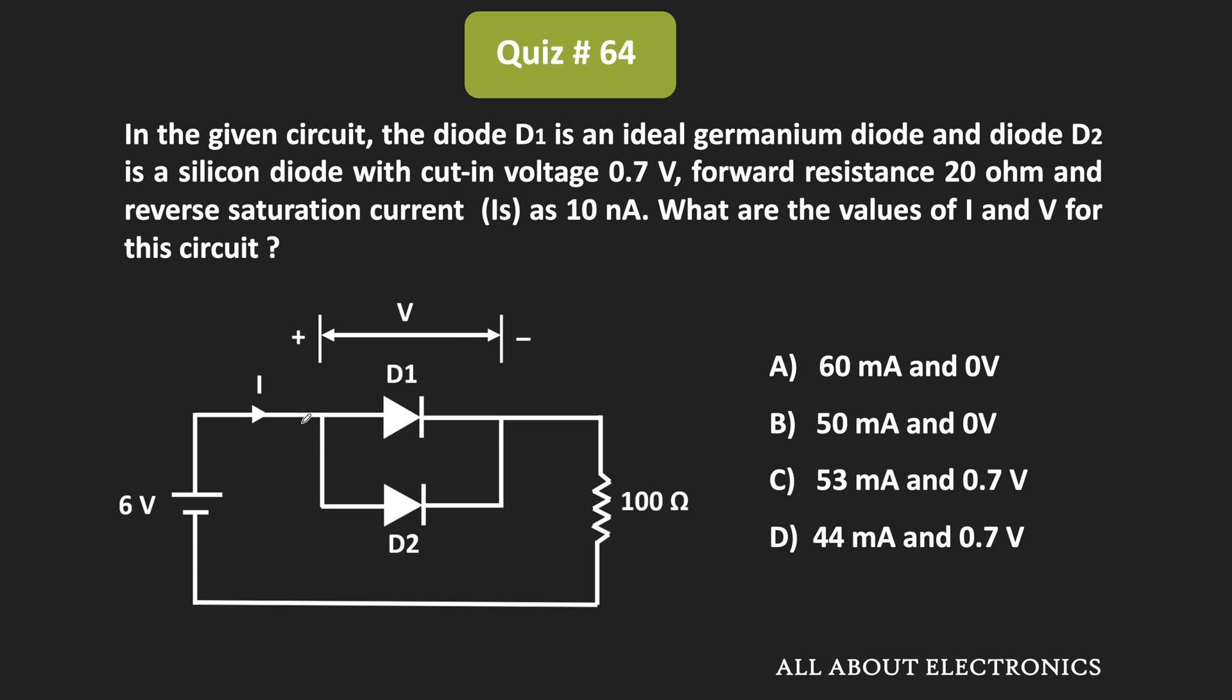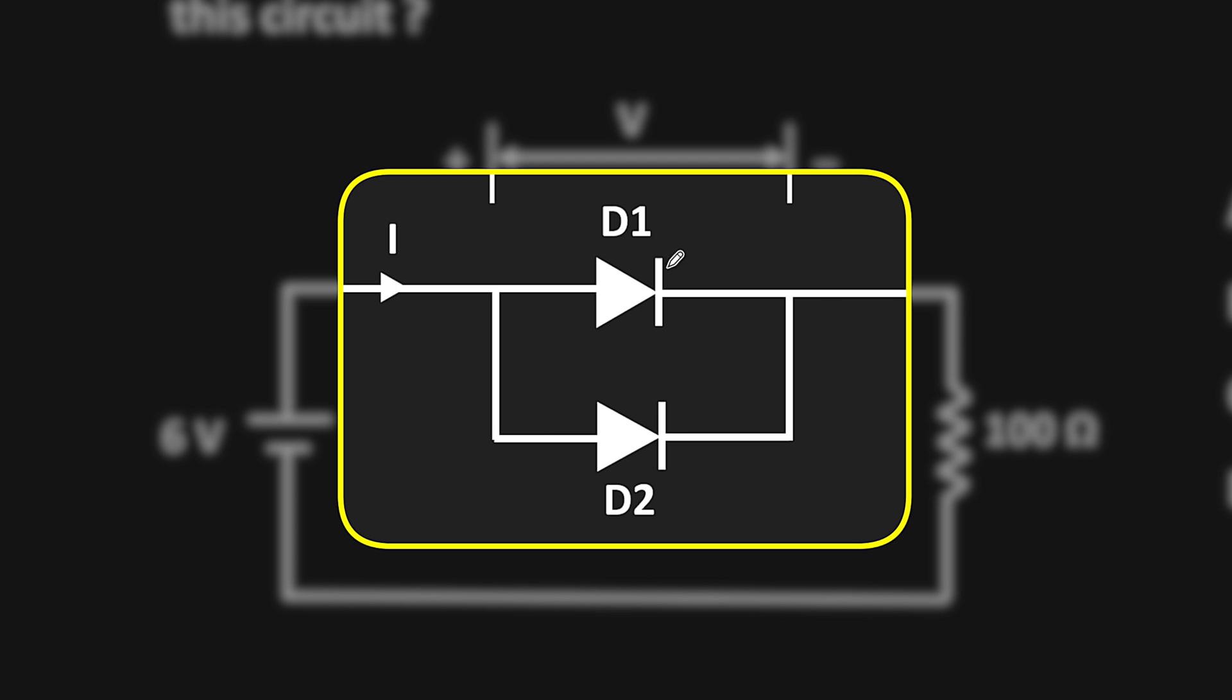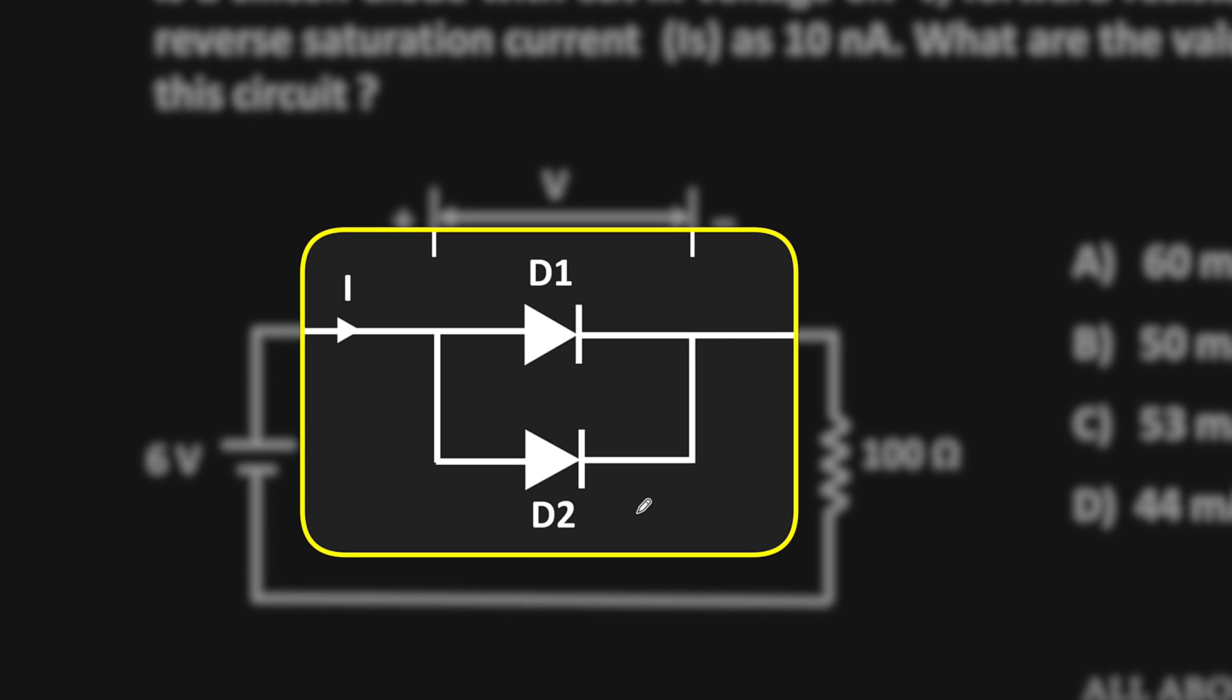As you can see, in this circuit, diodes D1 and D2 are connected in parallel. D1 is an ideal germanium diode, while D2 is a silicon diode.